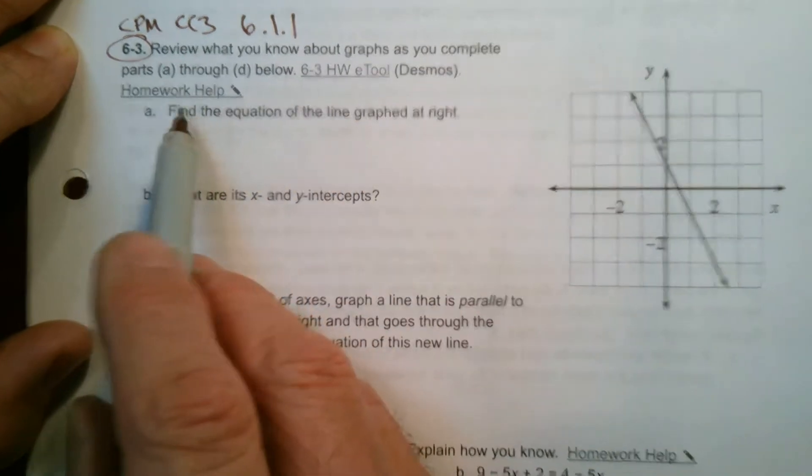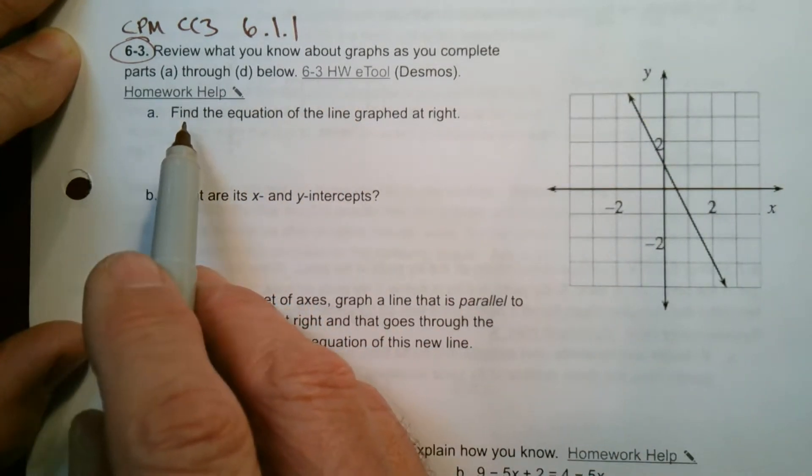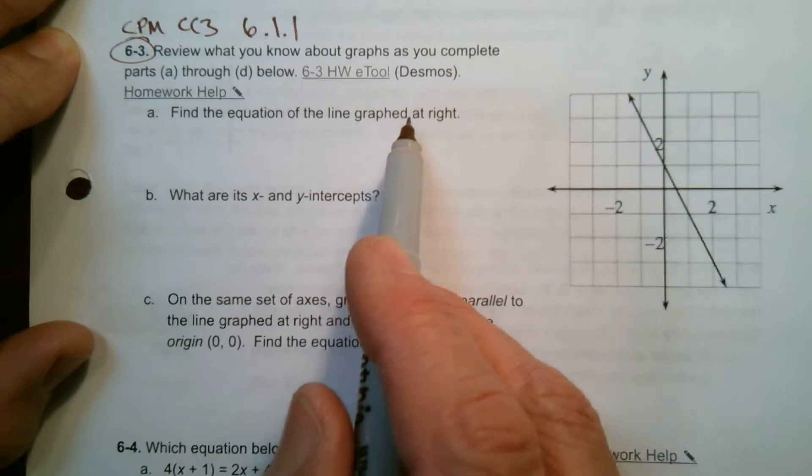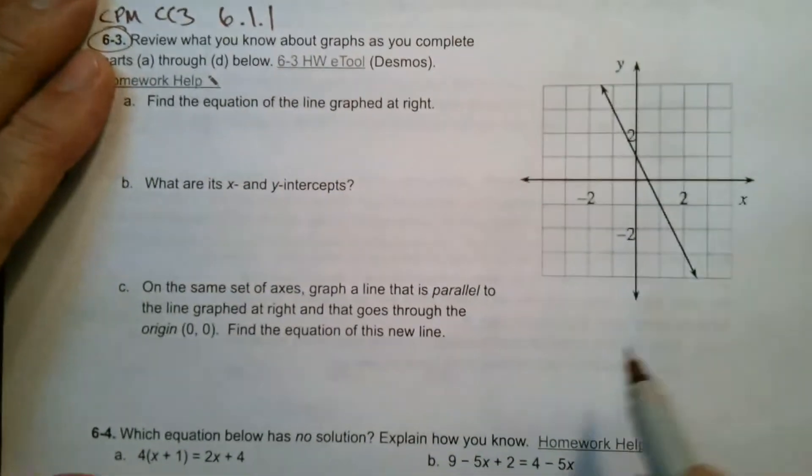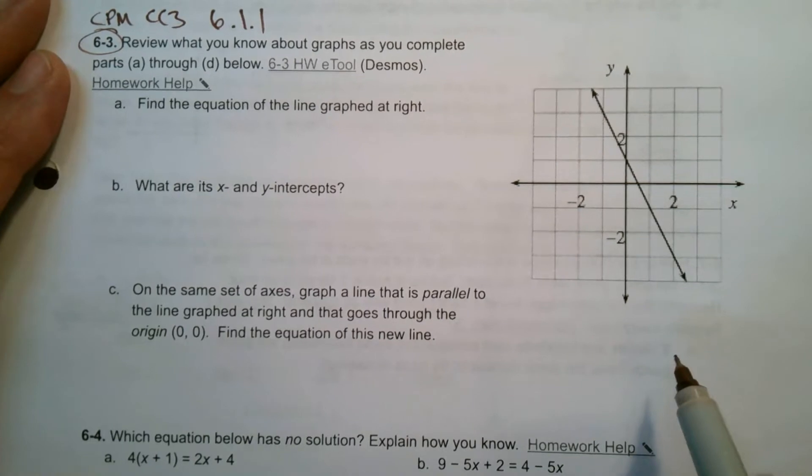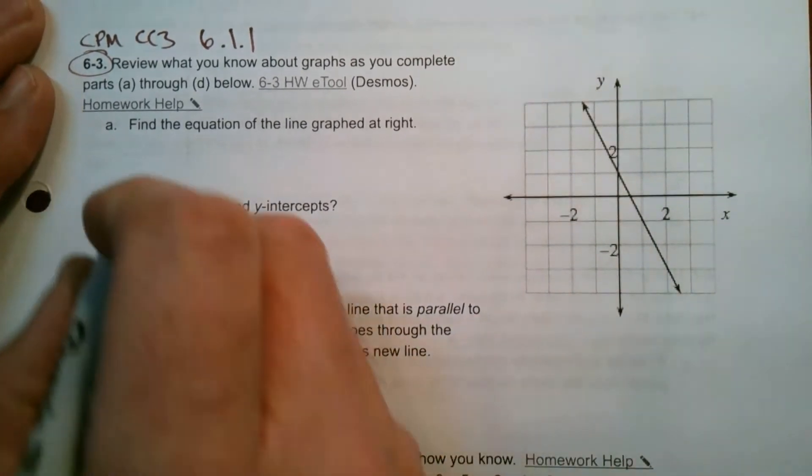So let's go from there. Part A says find the equation of the line graphed at the right. So here's my graph, my line, right? So keep in mind, remember, y is equal to mx plus b.